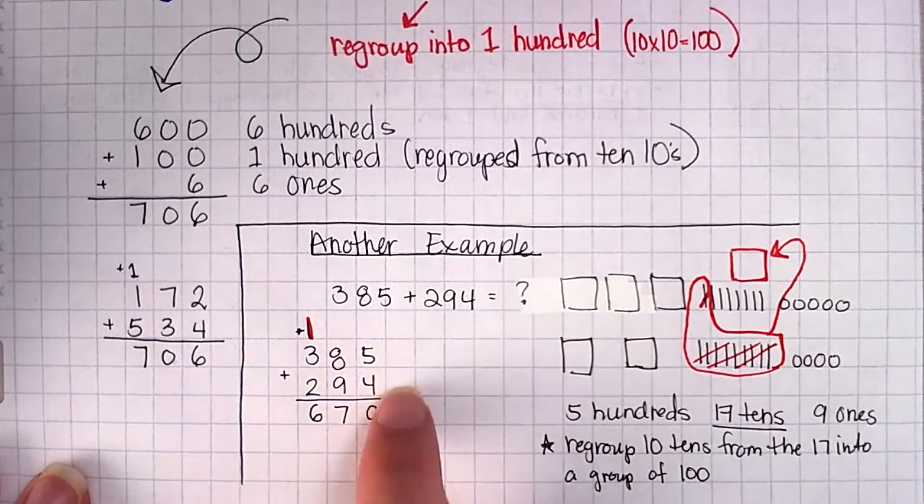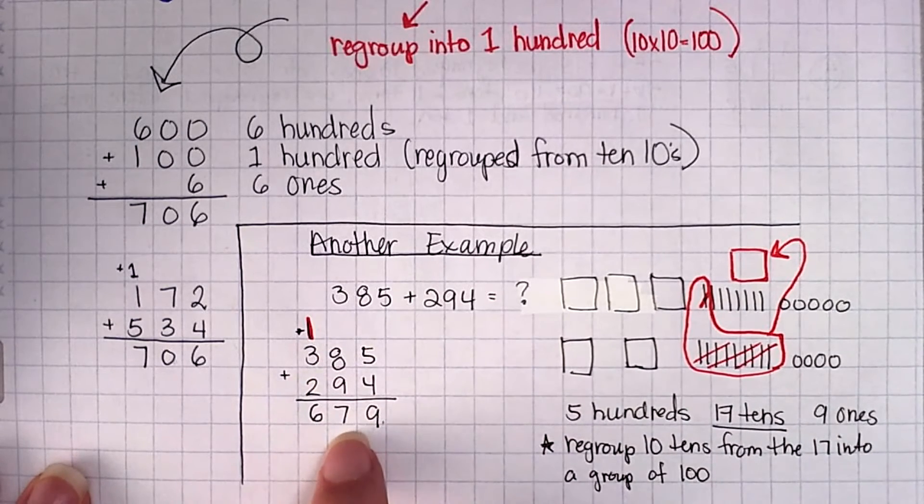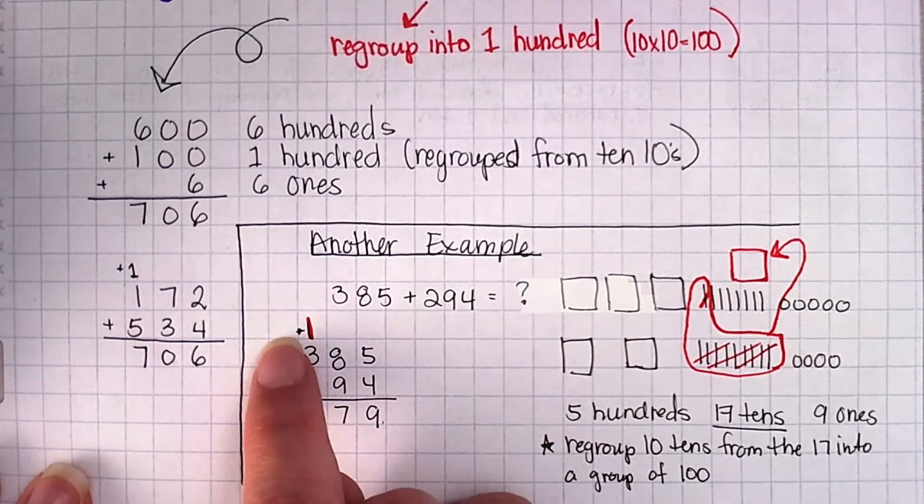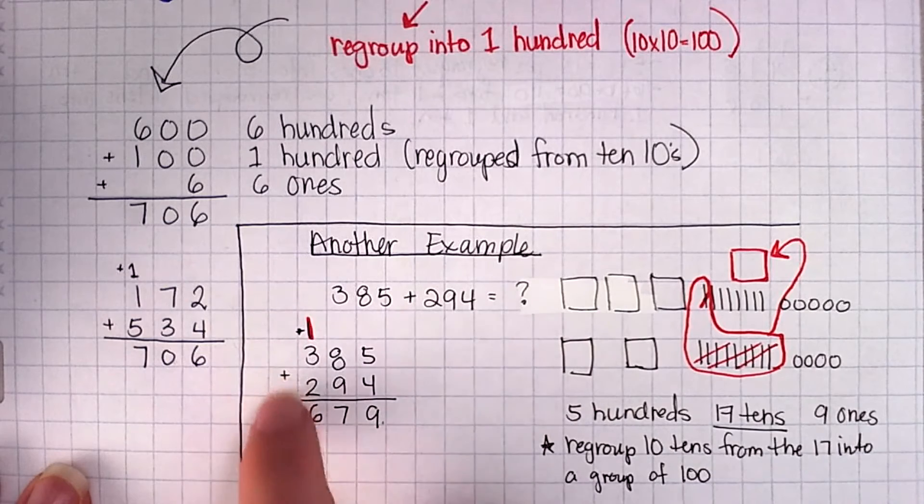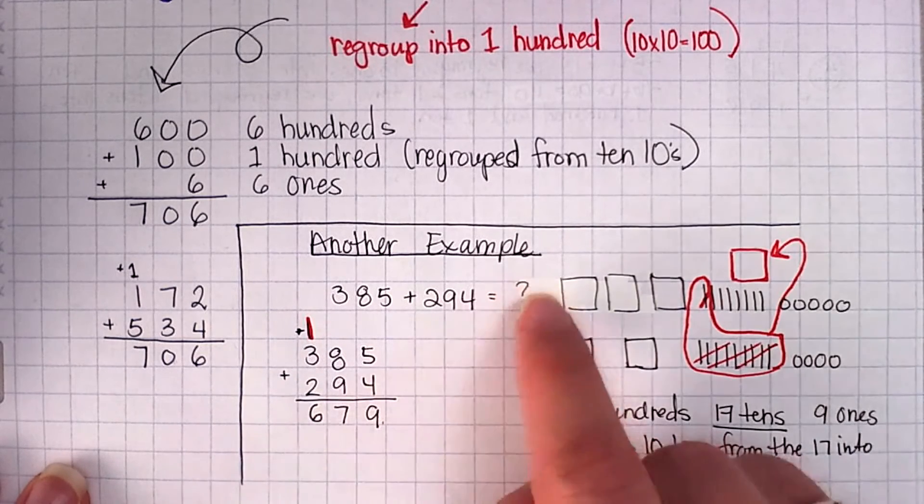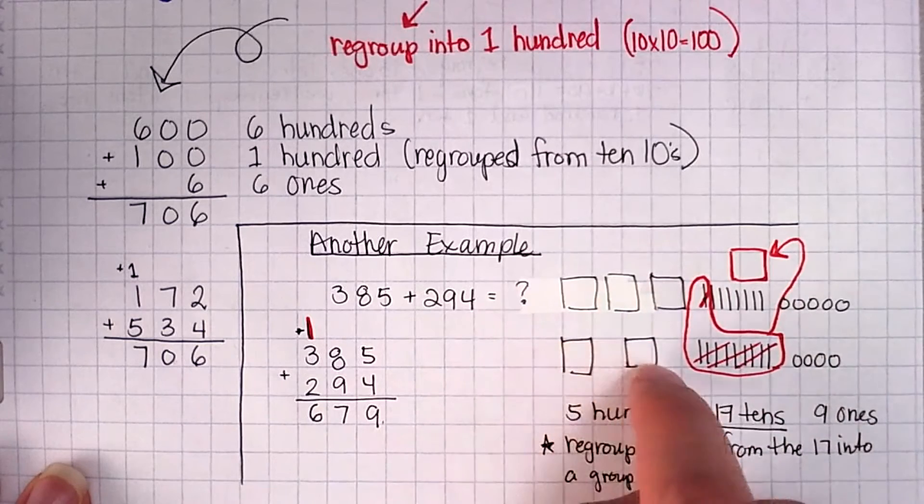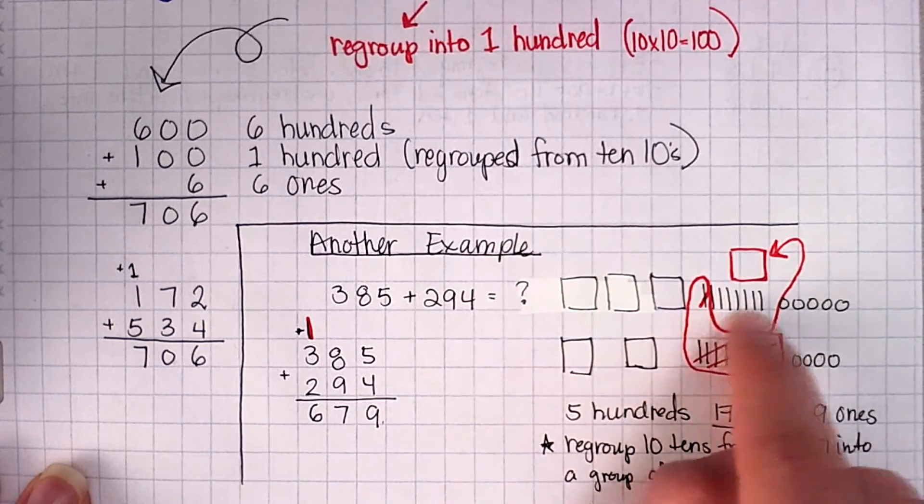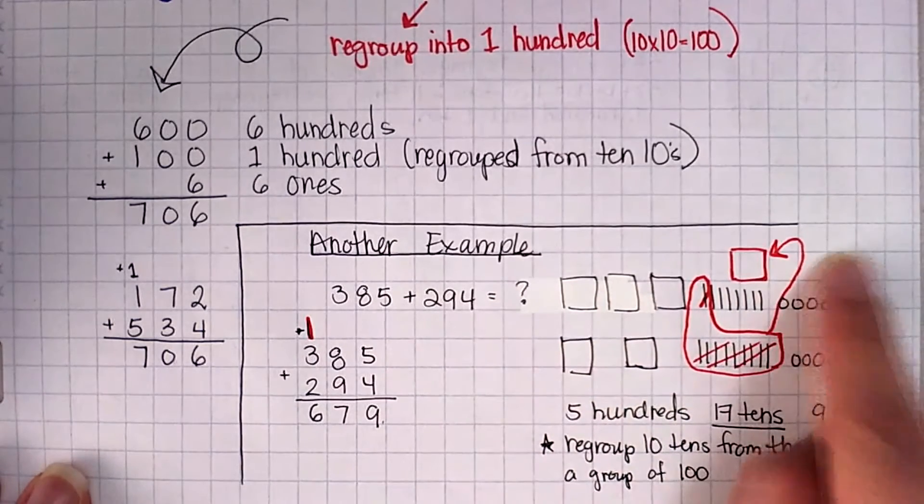So over here, 5 plus 4, that's my 9 ones. 9 plus 8 was 17 tens. So I kept 7 of those tens. And I moved the other group of 10 that I pulled out into the 100s. So 1 plus 3 plus 2 gave me 6. That's how I got to 679. So 1, 2, 3, 4, 5, 600, 7 tens, and 9 ones.